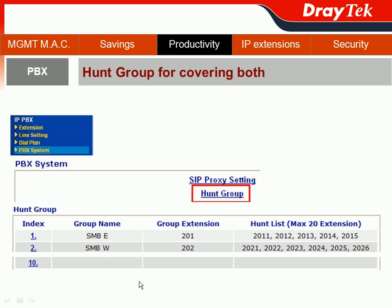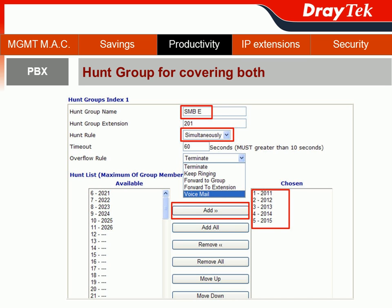I will use two examples to explain the configuration steps. First is the SMBX team, which has the hunt group extension 201. When there is an incoming call to their group extension, the SMBX team would like their hunt group to ring simultaneously. This is because the SMBX team would like every available rep to participate for those incoming calls. So we add all available extensions belonging to the SMBX team — from extension 2011 all the way to 2015 — to include every member of the team.